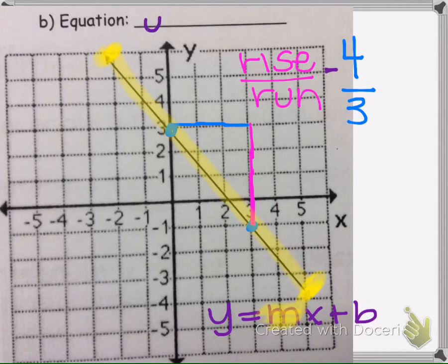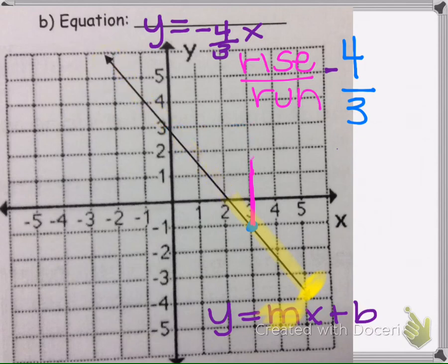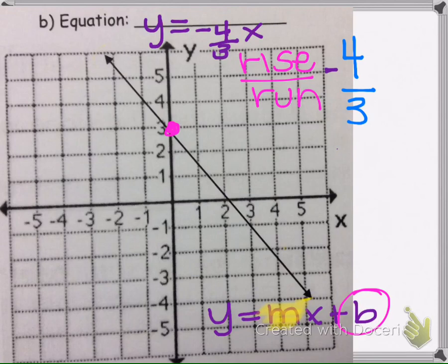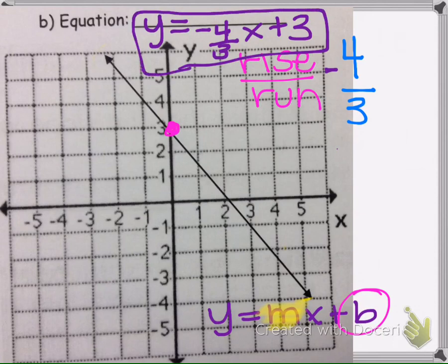In our equation we have y equals negative 4 thirds x. Now we need to find our b value — where the line crosses the vertical intercept or y-axis. It intersects right here at 3, so our b value is 3. Our final equation is y equals negative 4 thirds x plus 3.